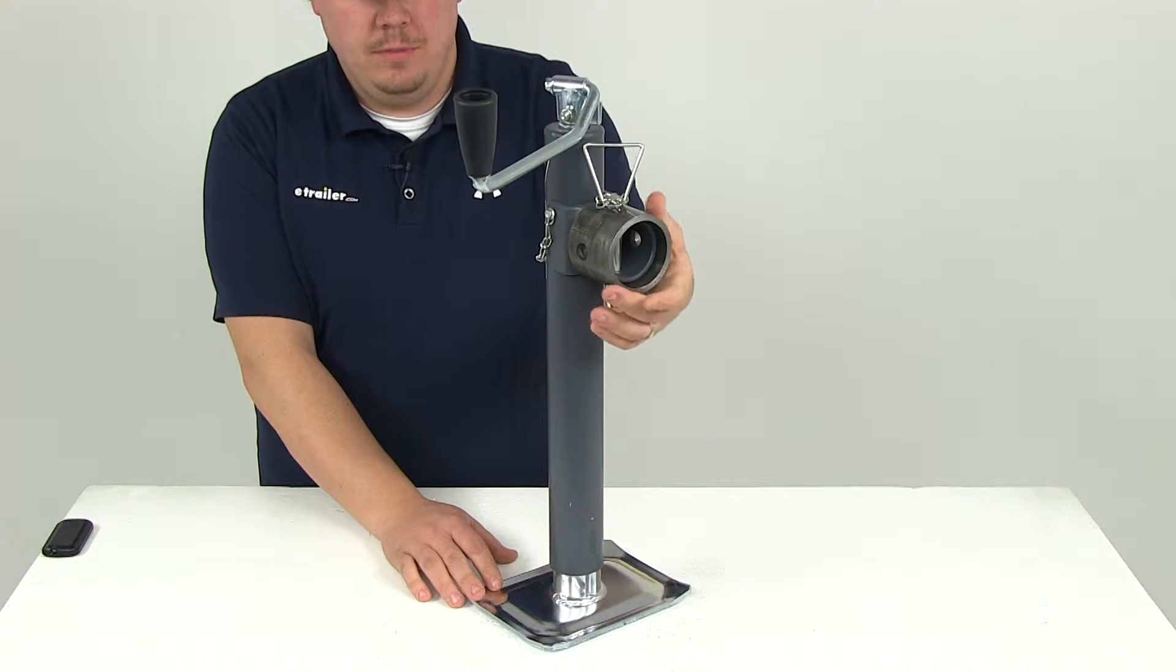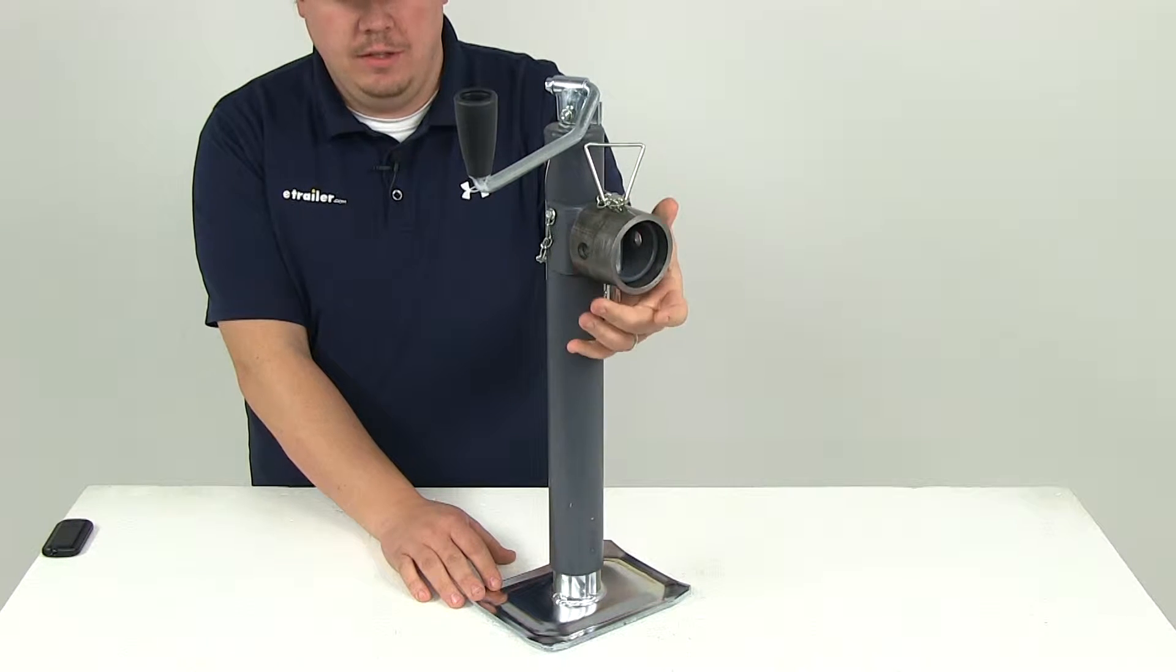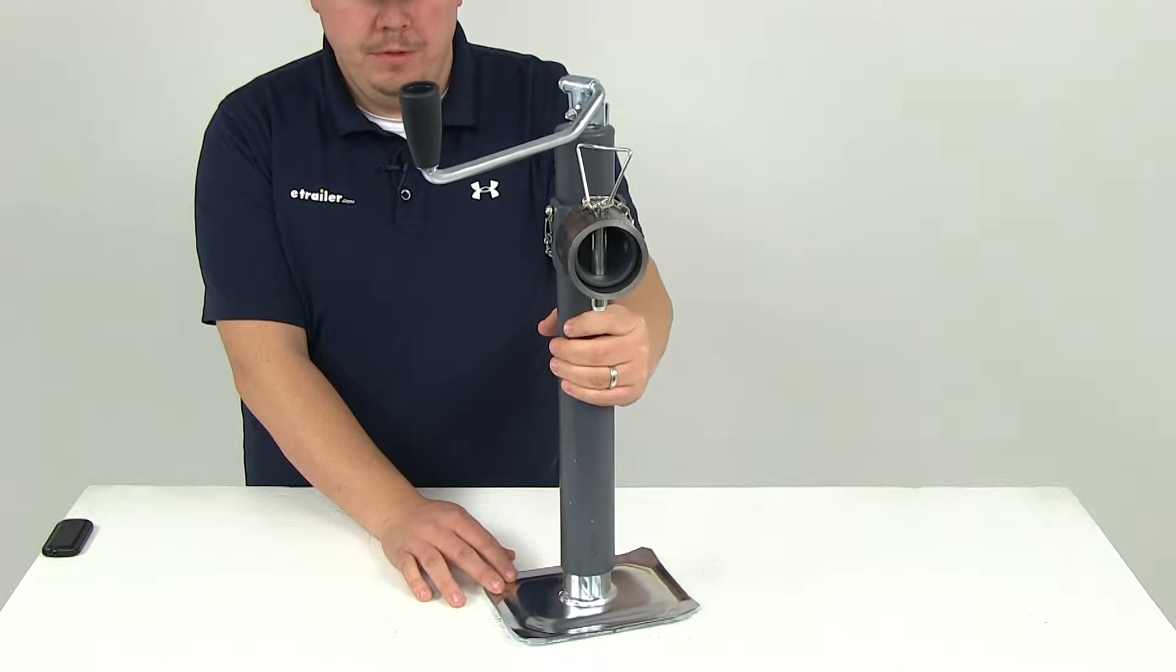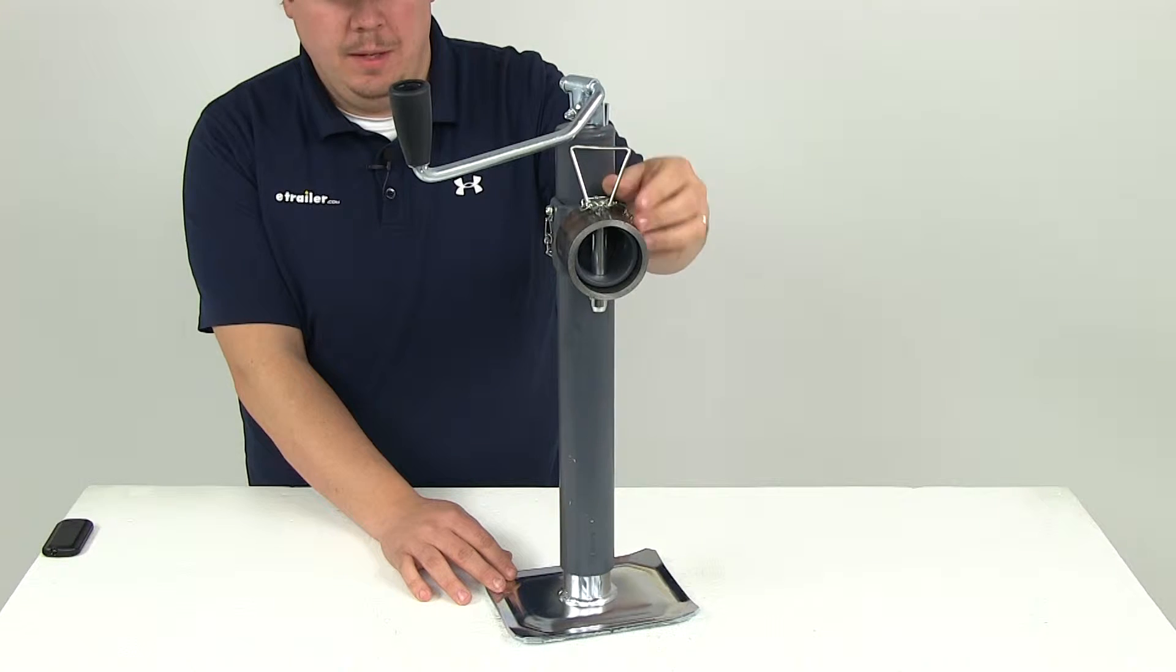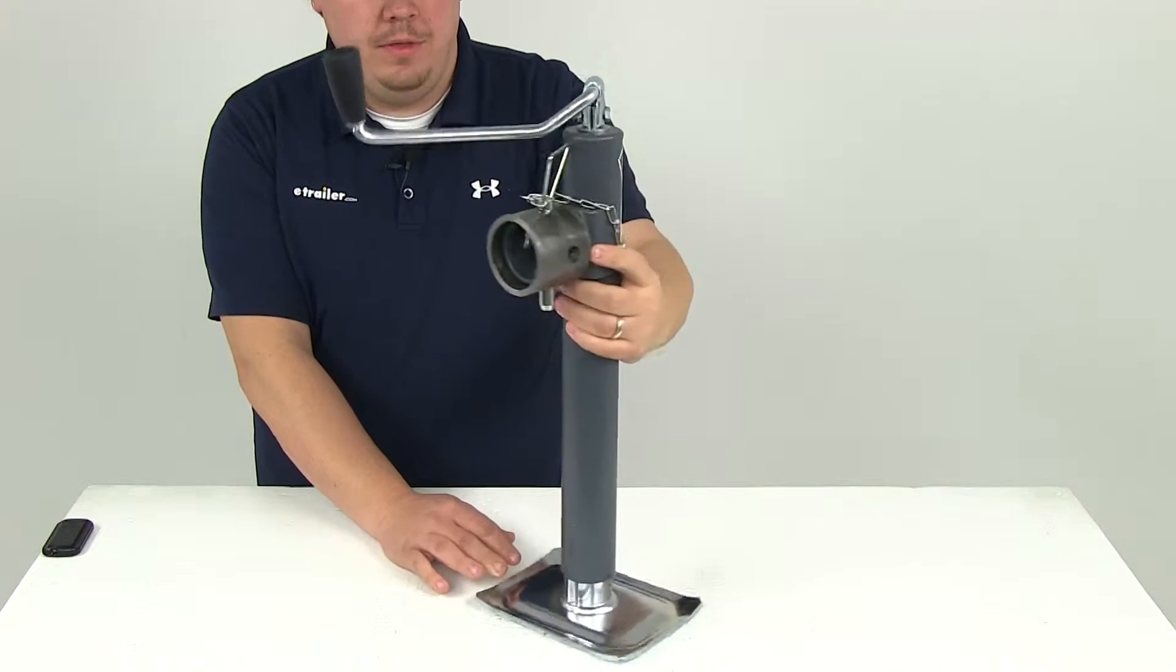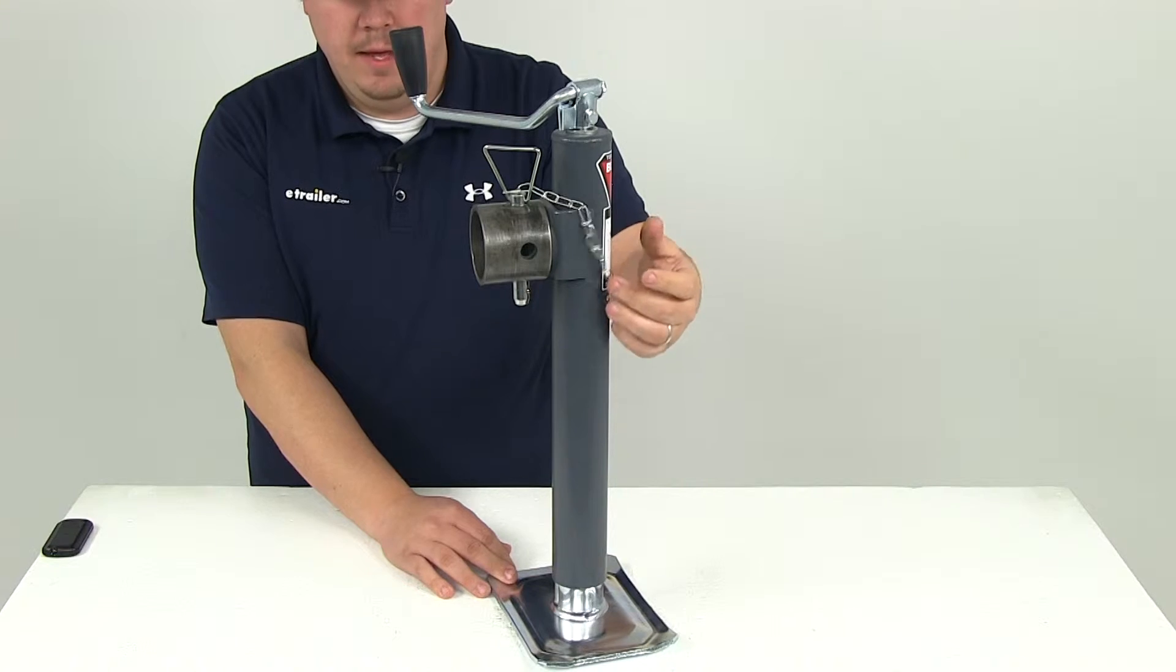You can see right here this is the tubular swivel design that's going to let you swing the jack up for travel or down for use. It also features the included pool pin that holds the jack in place. It's attached with a nice little chain so you don't have to worry about losing that pin.